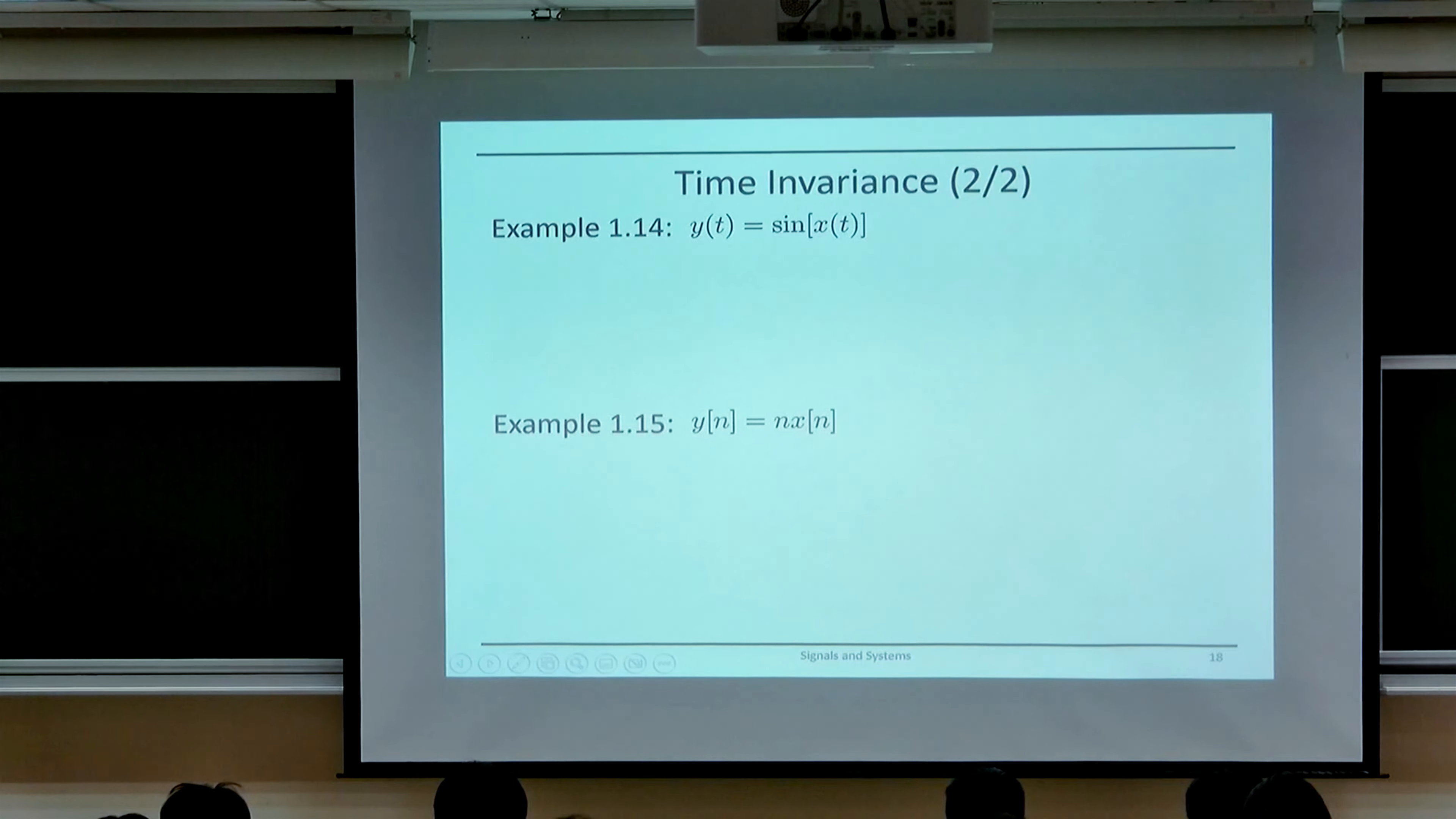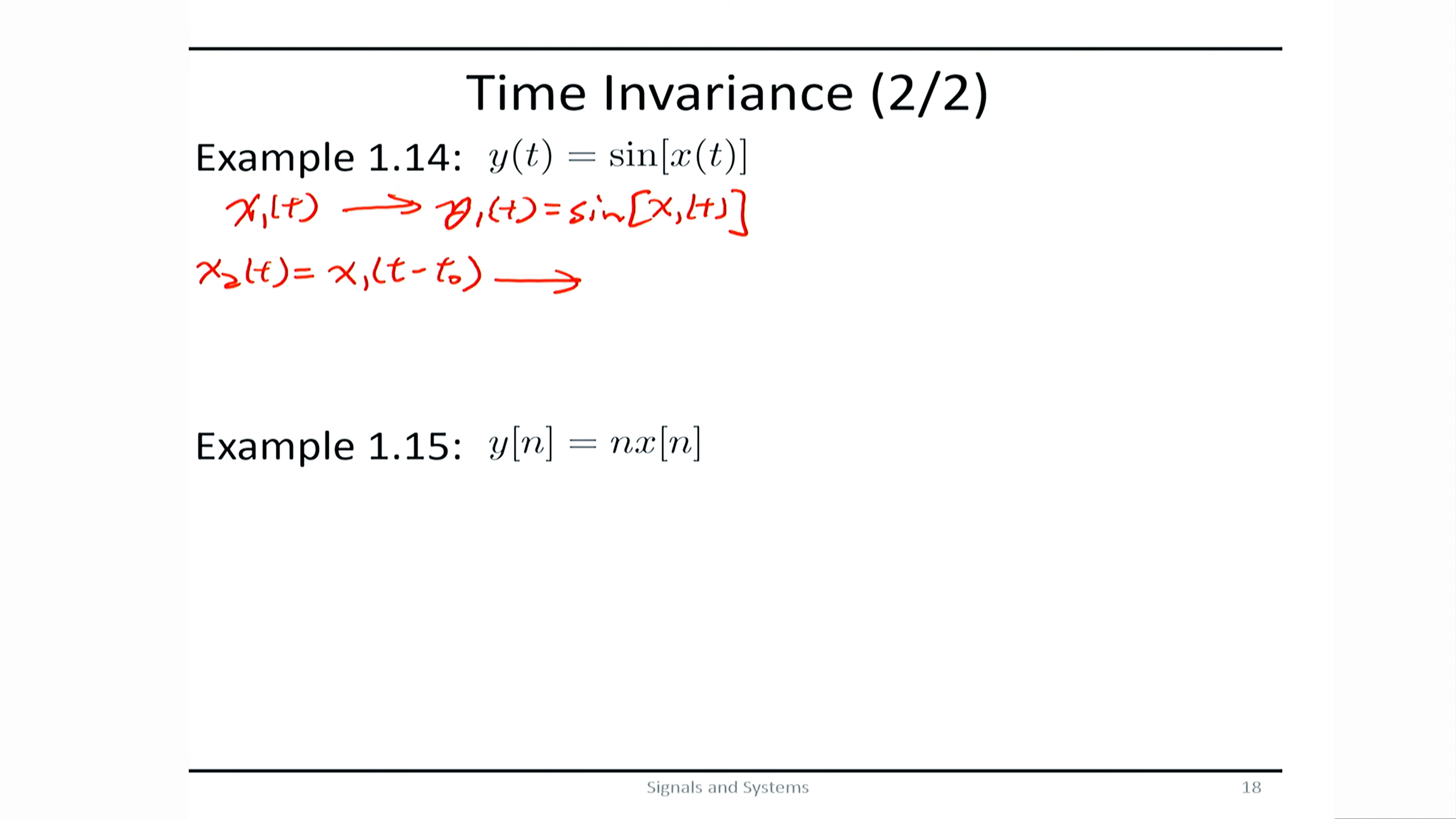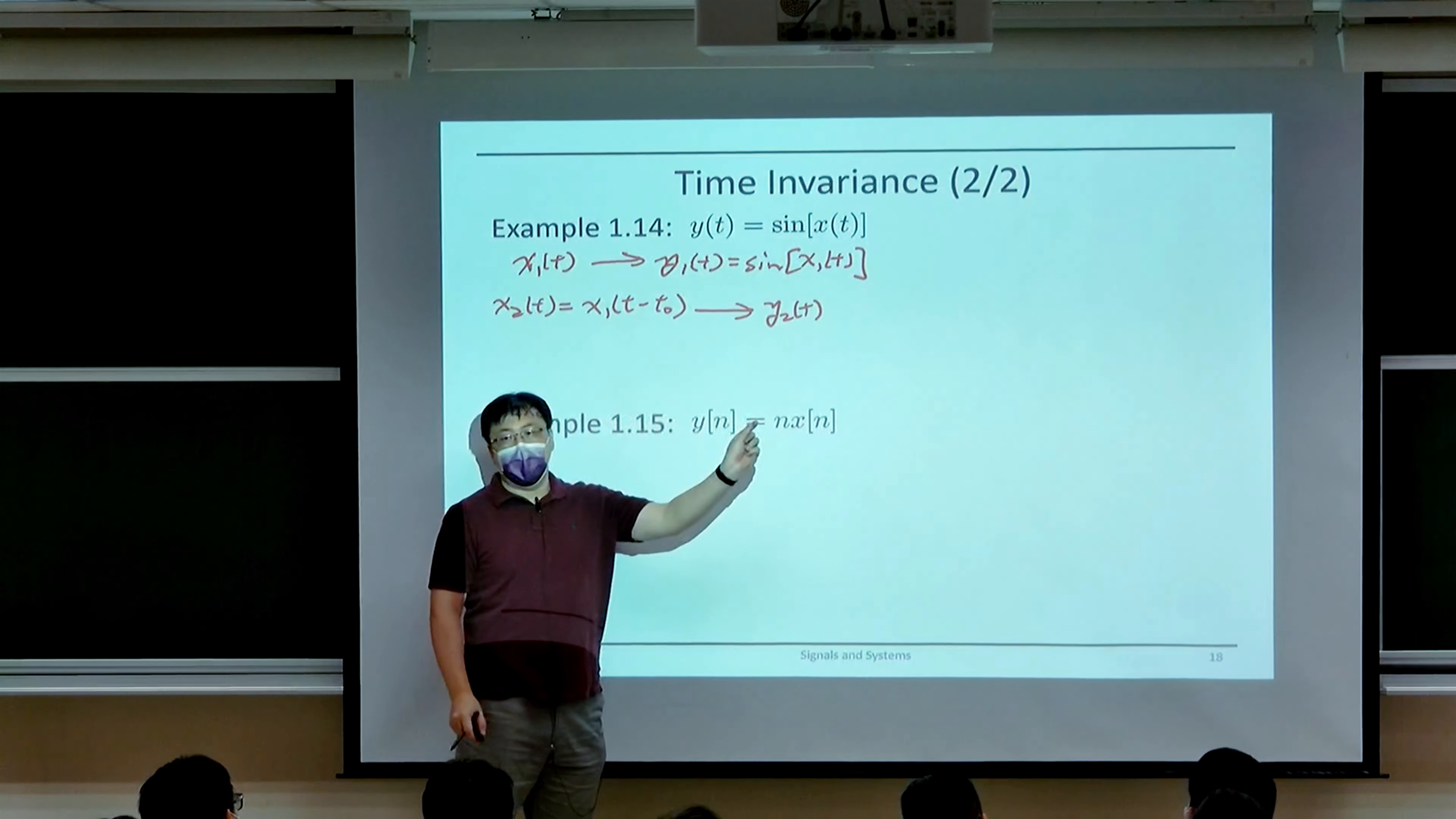So suppose we first look at an input x₁(t), and its output y₁(t) is sine of x₁(t). Now to show that it is time invariant, we need to show that if we insert a signal x₂(t) that is equal to x₁(t) minus some time shift t₀, we hope that the output y₂(t) will be equal to y₁(t) shifted by the same time t₀.